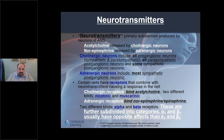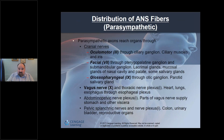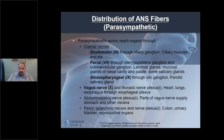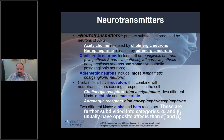Acetylcholine is released via cholinergic neurons. All preganglionic neurons in both the sympathetic and parasympathetic systems are cholinergic — acetylcholine is the neurotransmitter released at those preganglionic synapses.